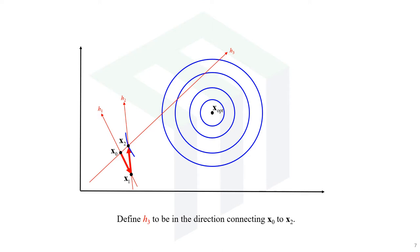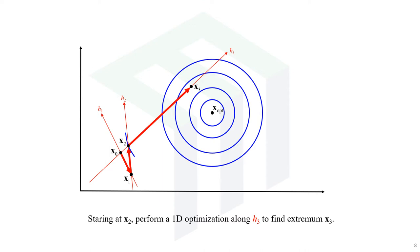At this point we define a new direction h3 in the direction connecting x-naught to x2. This h3 is our first conjugate direction. Starting at x2 — which is a better guess than x-naught — we perform a one-dimensional optimization along h3 and converge to the local extrema x3.